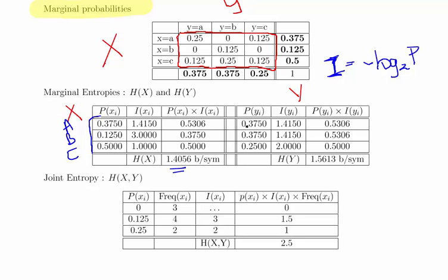Now, I do the same sort of calculation here for the outputs. I have the probabilities here of A, B and C. And what I do here is calculate the corresponding informations, which is again, minus log to the base two of the probability. So that is 1.415, 1.415 and 2.00. So what I do here now is I calculate the probability times the information and add them all up. 0.5306, 0.5306 plus 0.500. And that gives us an answer of 1.5613 bits per symbol.